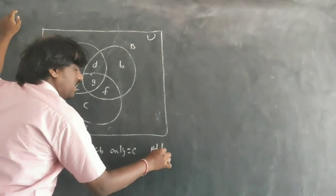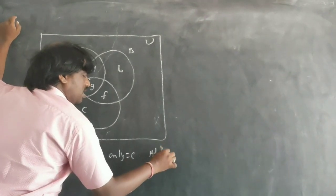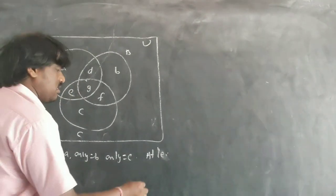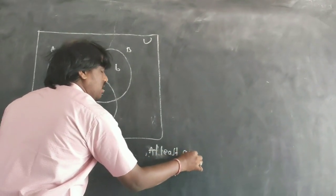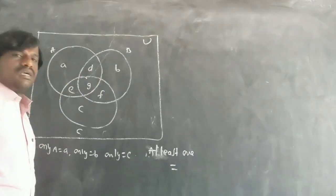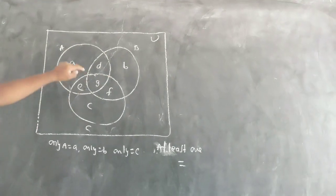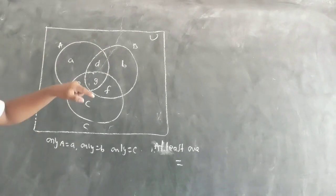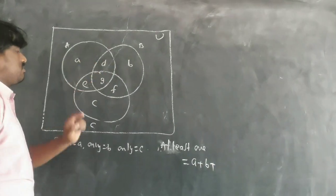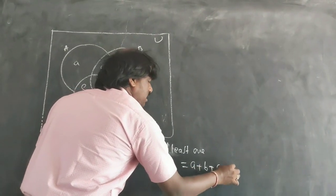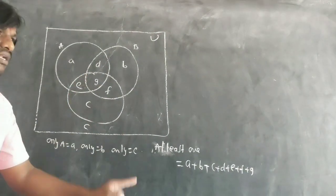At least one — whenever they say 'at least one,' the meaning is one or more than one. The answer is A + B + C + D + E + F + G. That is the union of all three sets. At least two means two or more, and at least three means three or more.